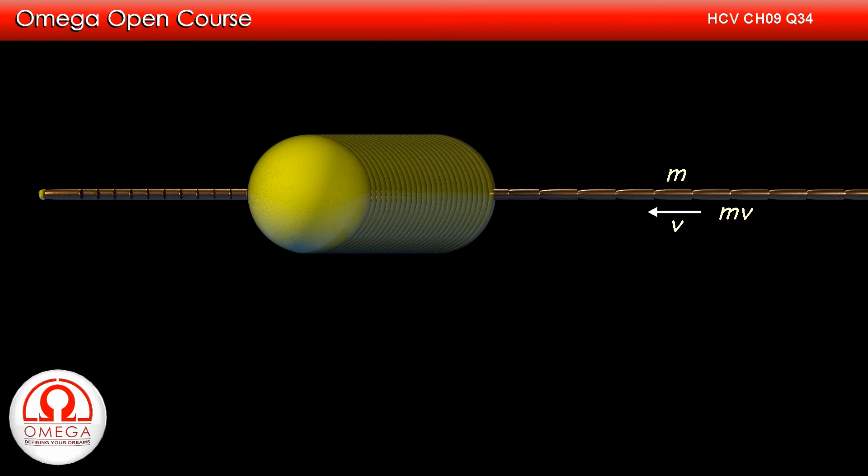The initial momentum of the bullet is M into V. After the collision, M' mass breaks off from the ball, so the mass of the remaining ball is capital M minus M'. Its velocity is V1, so the momentum of the remaining portion of the ball is capital M minus M' into V1.